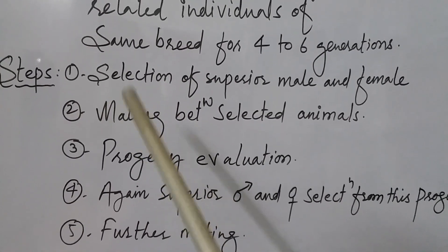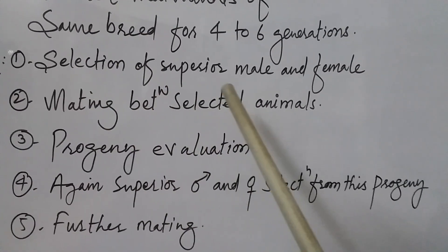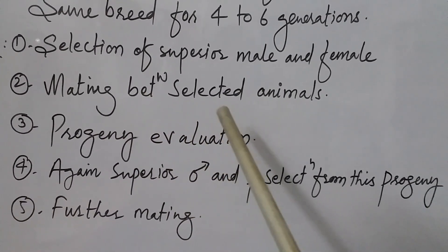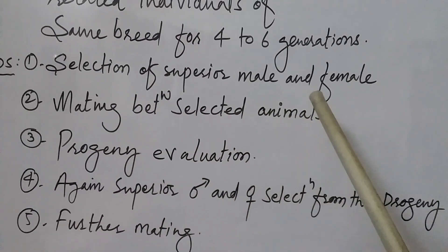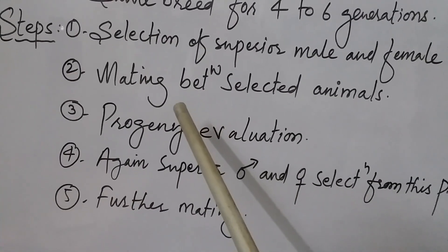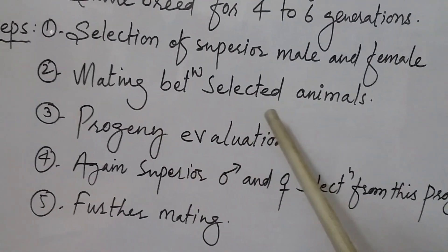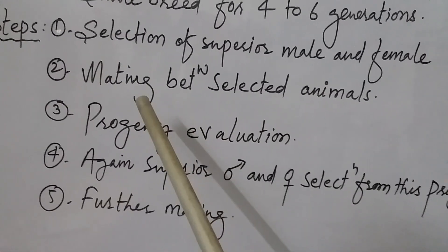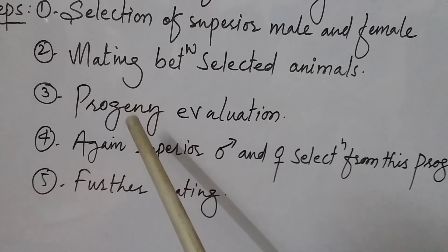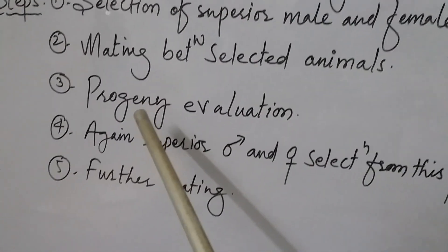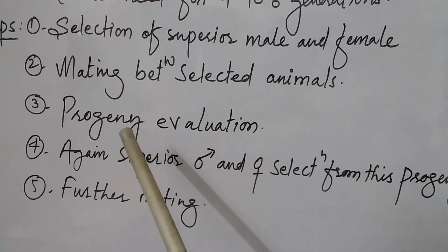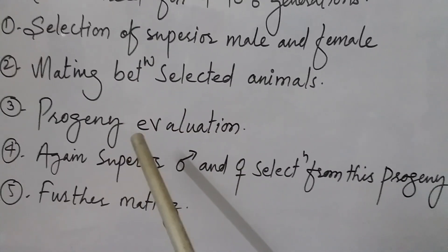After selecting the superior male and female, the next step is mating between the selected animals. If you have selected one superior female cow and a superior male bull, you proceed with mating between those selected animals. After mating they produce their progeny, and you then evaluate that progeny to determine whether it has attained the superior quality or not.